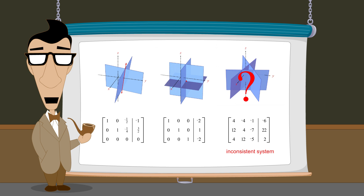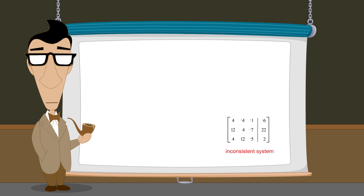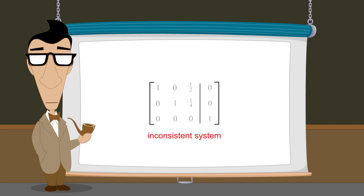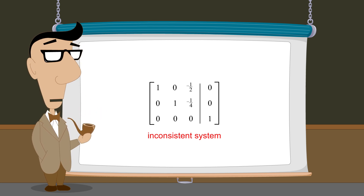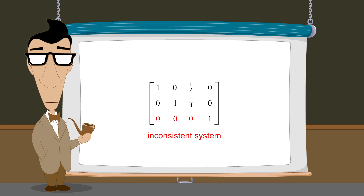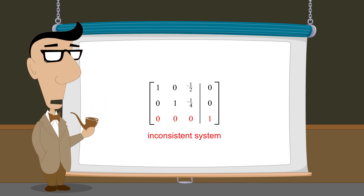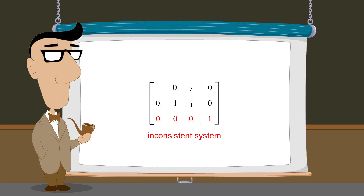In the previous lecture, we saw that when a matrix representing an inconsistent system is reduced using Gauss-Jordan elimination, at some point during the process a row will be produced with all zero-coefficient entries and a non-zero constant entry. In this lecture, we will examine different ways that a system of linear equations in three variables can be inconsistent, and how the planes which graphically represent this system change during the process of Gauss-Jordan elimination.